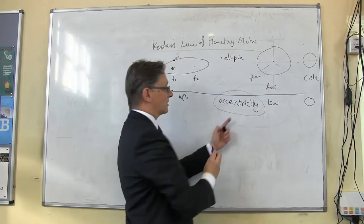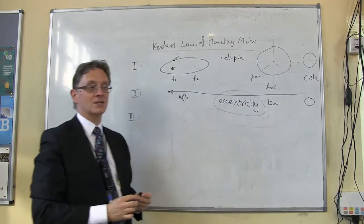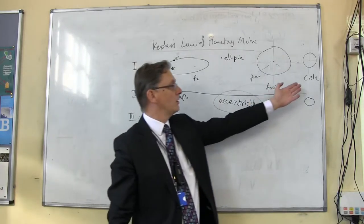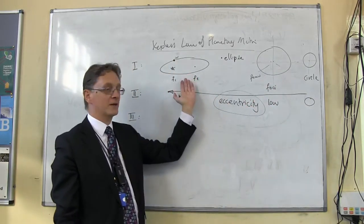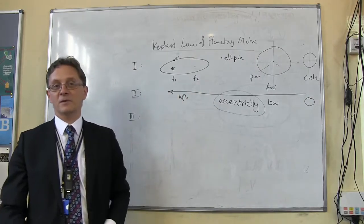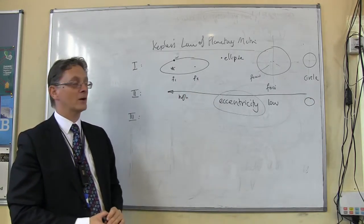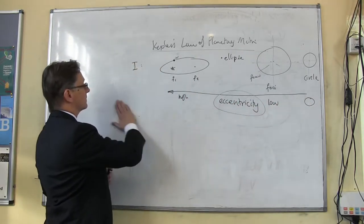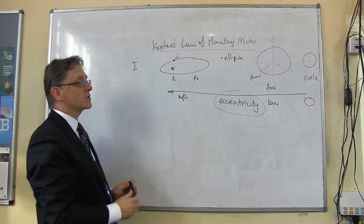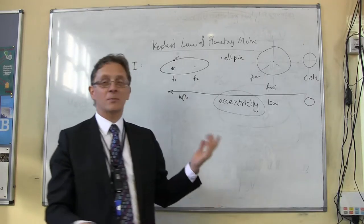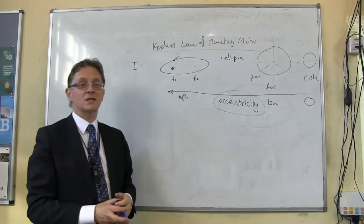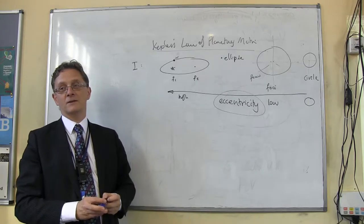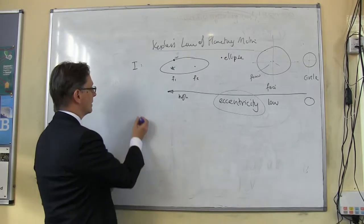Eccentricity is outside the syllabus, but if you want the proper scientific way, that's it. So the sentence for the first law is: the orbits of the planets are ellipses with the Sun at one focus. The first law is all about the shape of the orbits — Kepler spent his whole life discovering the true shape of the orbit, so unsurprisingly his first law is all about that.